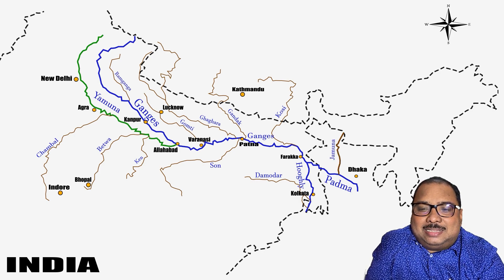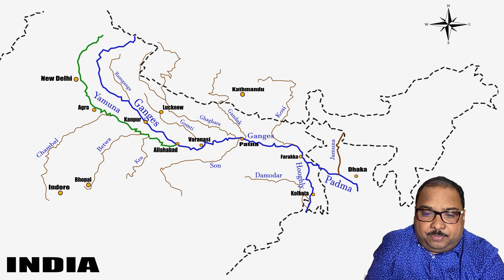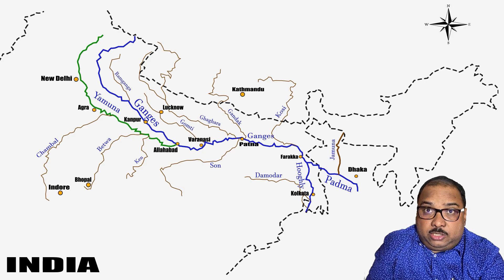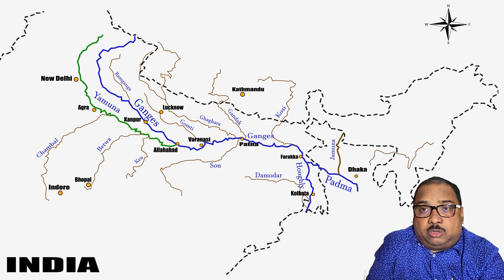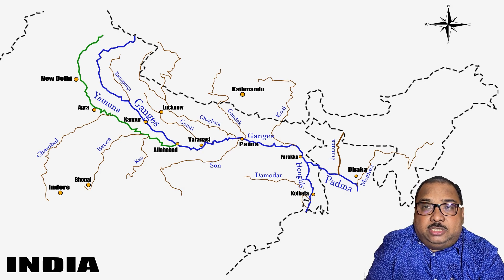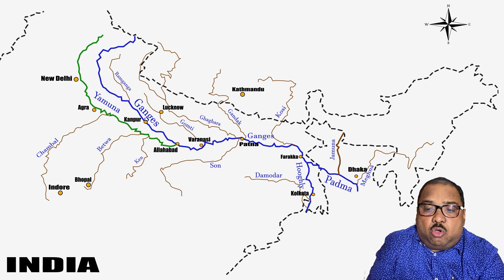The river Ganga flowing in Bangladesh is known as Padma. Another mighty river of India, Brahmaputra, also enters Bangladesh, where its name is Jamuna — not the Yamuna river of India that flows near Delhi. In Assam it is Brahmaputra, and then it takes the name Jamuna upon entering Bangladesh. The combined stream of Padma and Jamuna meets at a particular place in Bangladesh, and the combined stream is known as Meghna.